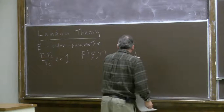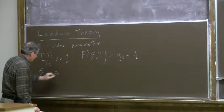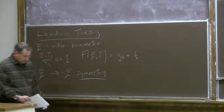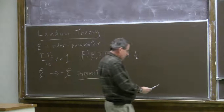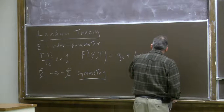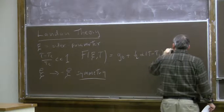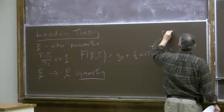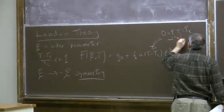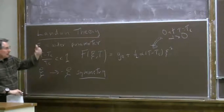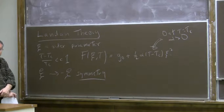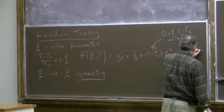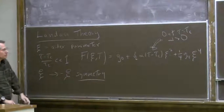The important assumption is that there's an order parameter goes to minus order parameter symmetry, like in the magnetic model. So there are no odd terms. The next term in the power series expansion in the order parameter is quadratic, and that quadratic term has a coefficient which changes sign at the critical temperature. I'm considering alpha to be positive, so the quadratic term has a positive coefficient for temperature above critical temperature and negative for T less than T_c. Then there are higher order even power terms, the next being the fourth power.